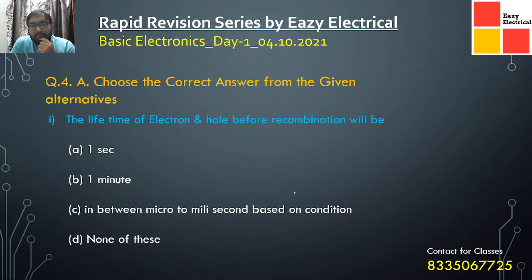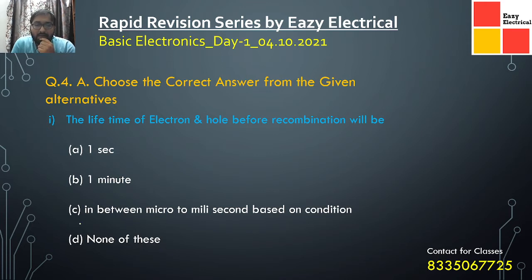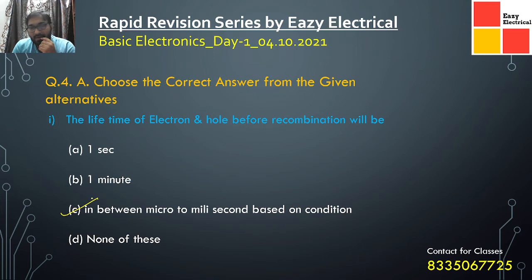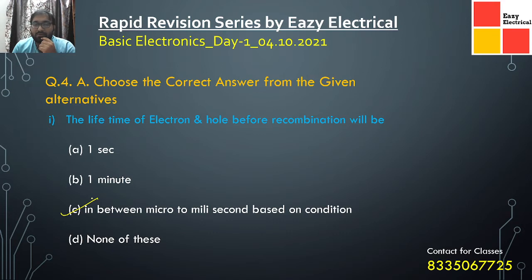The lifetime of an electron and hole before recombination — is it 1 second, 1 minute, between millisecond and microsecond, or none of these? The correct answer is the third option: it takes very little time and varies between microsecond and millisecond depending on the applied field and conditions. Recombination occurs when free electrons and holes meet together and release energy.